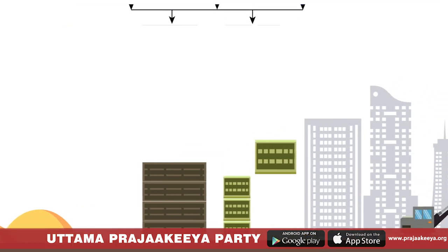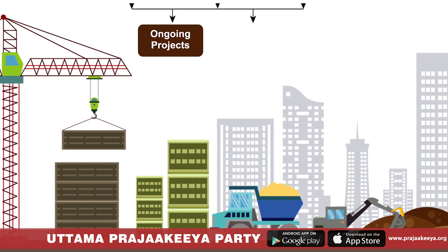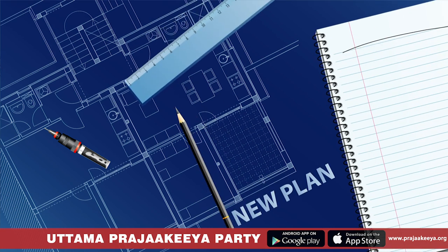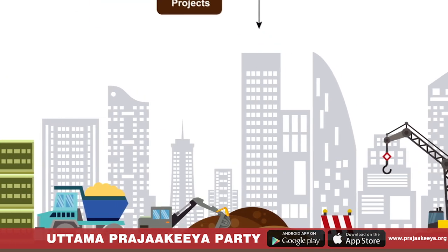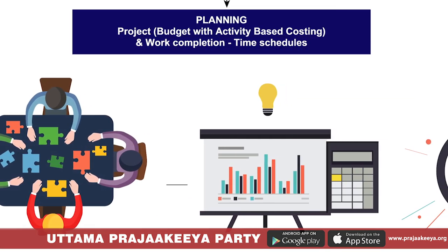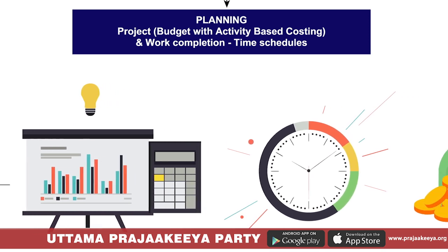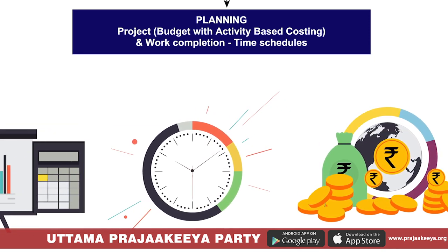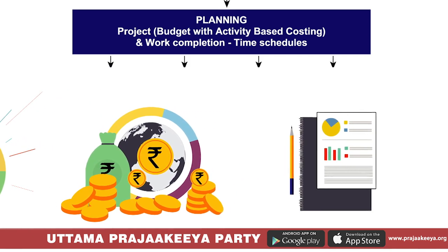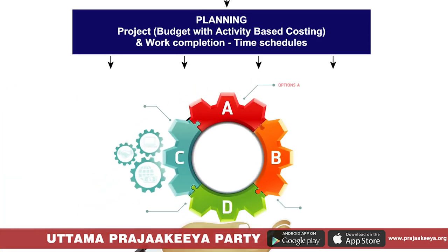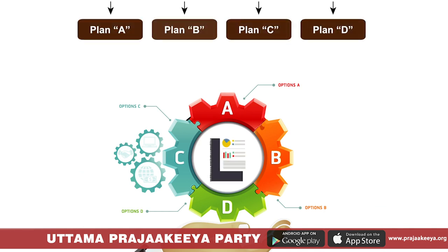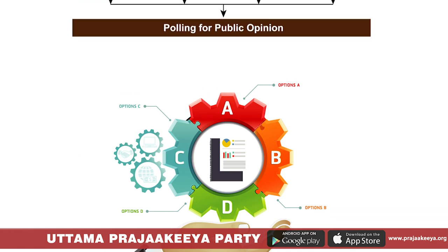When we consider the demands of the public, some will be on presently ongoing projects and some will be totally new proposals. New proposals will have to be discussed with experts and a detailed project report with cost estimates, budget, time required to execute and different options available will be prepared. Different proposals grouped as Proposal A, B, C and D will be prepared and placed before the public for polling.